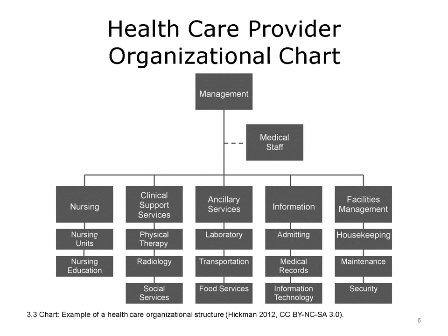Before it reaches the divisions in the third row, it connects by a dotted line to medical staff, a quasi-autonomous division that usually reports to the chief medical officer or the chief executive officer. The five divisions and example departments within those divisions are: nursing with nursing units and nursing education departments; clinical support services with physical therapy, radiology, and social services departments; ancillary with laboratory, transportation, and food services departments; information with admitting, medical records, and information technology departments; and facilities management with housekeeping, maintenance, and security departments.